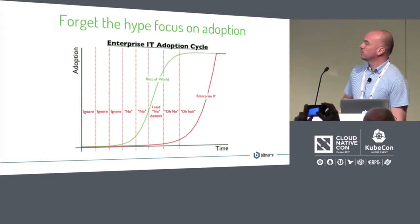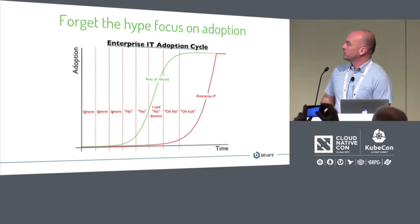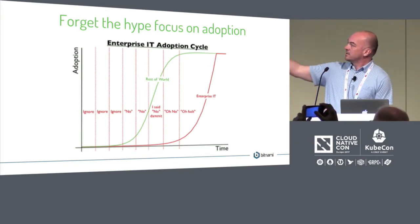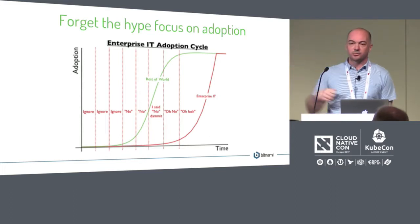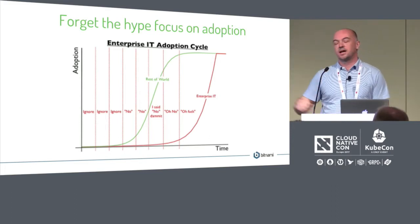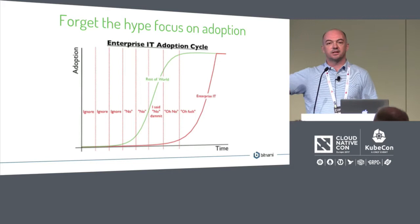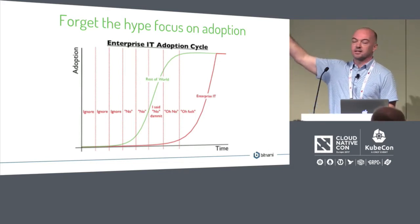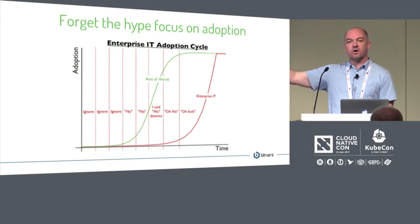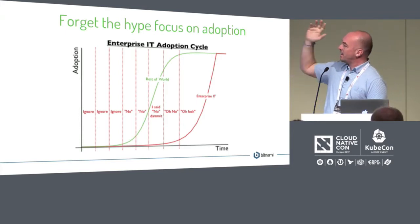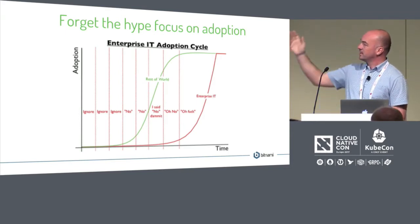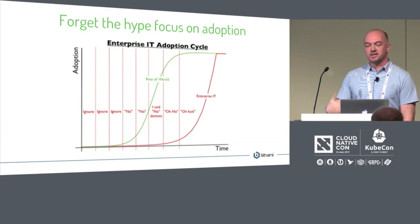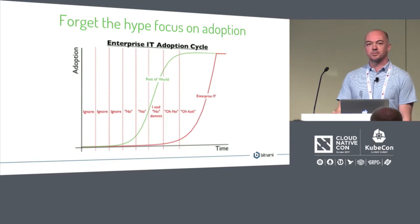That's from Simon Wardley, who said: the danger is — shown in red — the enterprise curve where the enterprise guy says 'no way,' dismisses the new tech, then sees the rest of the world adopting it, and then goes from 'no way' to 'maybe' to 'ah, it's too late.' The risk of dismissing all this is that the new tech gets adopted and you get left in the dust.